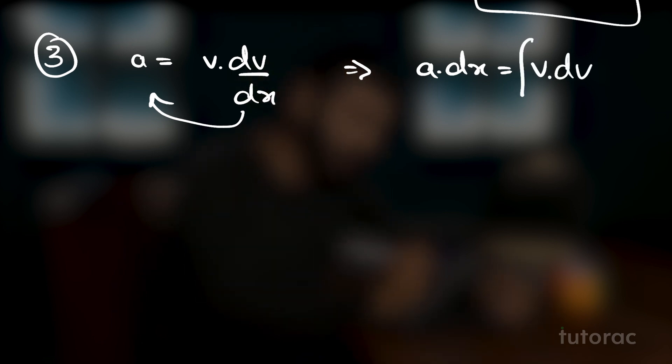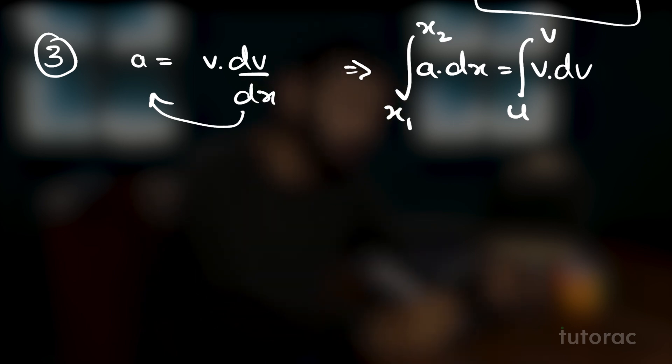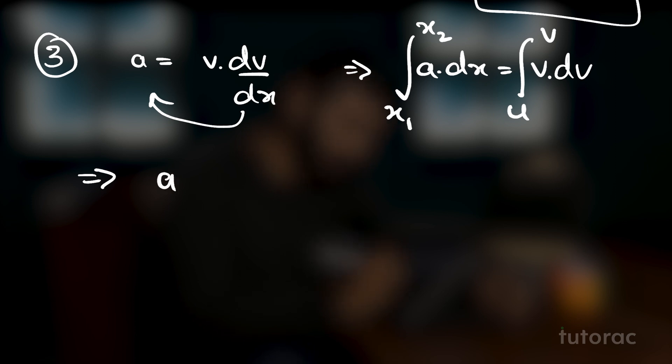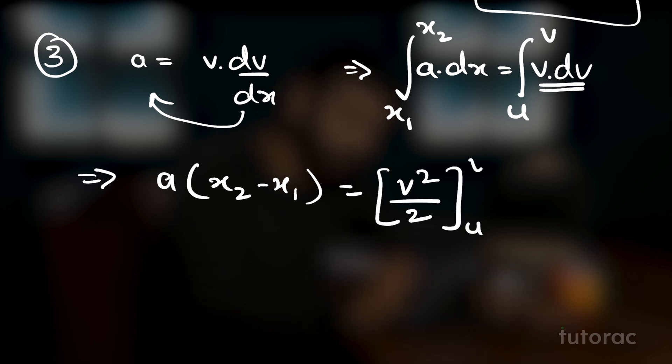The third equation of motion uses a equals v·dv/dx. Taking dx to the other side, we get a·dx equals v·dv. It is given that at time t equals 0, the particle is at x1 with initial velocity u, and after time t the velocity changes to v and position changes to x2. Integrating both sides and substituting limits, we get a·(x2 minus x1) equals the integration of v·dv, which gives v²/2 minus u²/2.